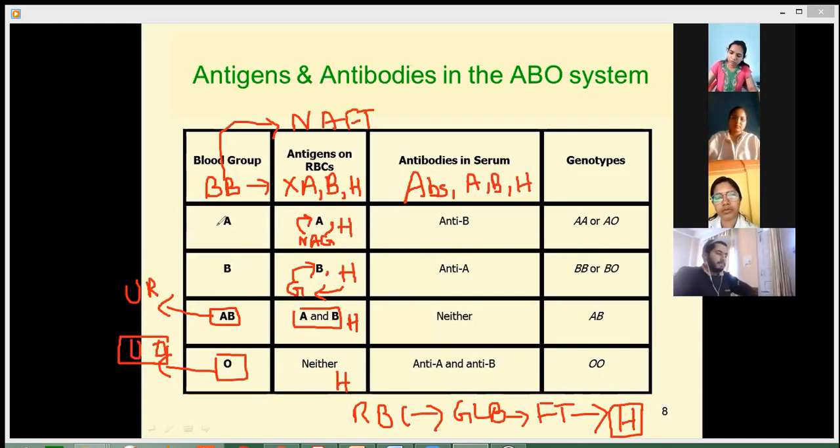So in A blood group, there is A antigen and H antigen. In B blood group, there is B antigen and H antigen.